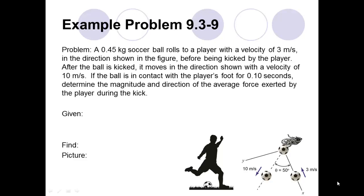So we read the problem. We have this picture to help us understand what's going on. We attempt to identify the information given and what we're trying to find. We're told the mass of the soccer ball is 0.45 kg. We're told the initial velocity is 3 meters per second in the direction shown — specifically, the initial velocity is in the negative x direction, the negative i direction, with units of meters per second.